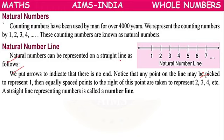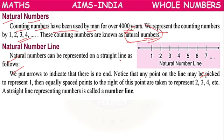What are natural numbers? The counting numbers have been used by man for over 4000 years. We represent the counting numbers as 1, 2, 3, 4. These counting numbers are known as natural numbers. From 4000 years onwards, we are making use of counting numbers starting from 1.